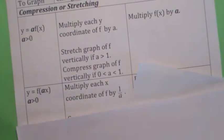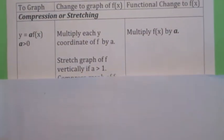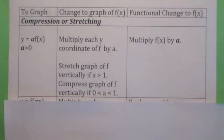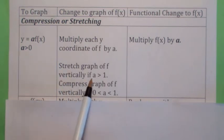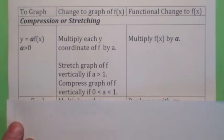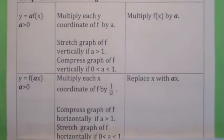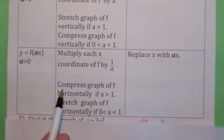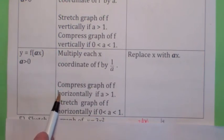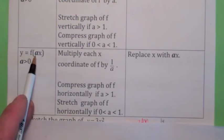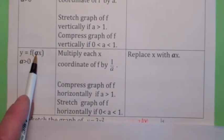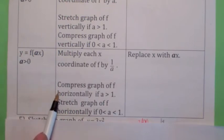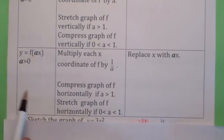Let's do a few more. There's the vertical and horizontal stretching and compression. The vertical stretch is accomplished when you have a function f of x and you multiply the y coordinate by a number a. If a is greater than 1, it becomes stretched. If a is between 0 and 1, it becomes compressed. If you take a function and you replace x with a times x, if a is greater than 1, that actually compresses the graph horizontally. And if a is between 0 and 1, it actually stretches it horizontally. For example, f of 4x would compress it by a factor of 4, and f of one-fourth x would stretch it horizontally by a factor of 4.